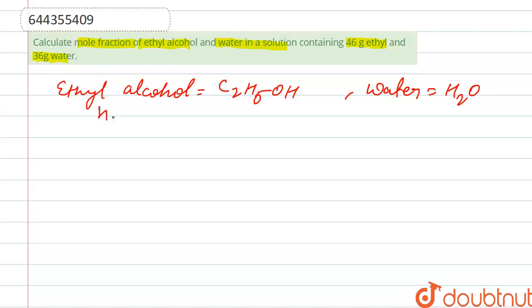We have to calculate the number of moles of ethyl alcohol, C2H5OH. The given mass is 46, and we know that the molecular mass of C2H5OH is 46, so its moles equal 1.